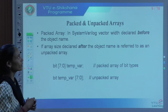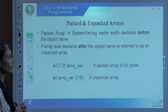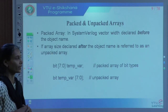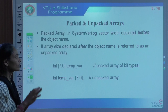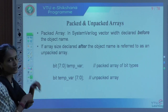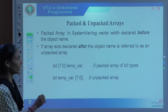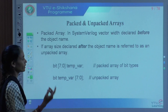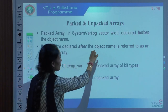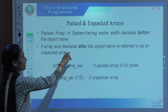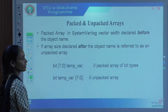Now let us move on to packed and unpacked arrays. In SystemVerilog, if the dimension or vector width is declared before the object name, it is called a packed array. If declared after the object name, it is called an unpacked array. For example, temp_var is the array name of bit type, 8-bit, declared after the object name — that is why it is called an unpacked array.